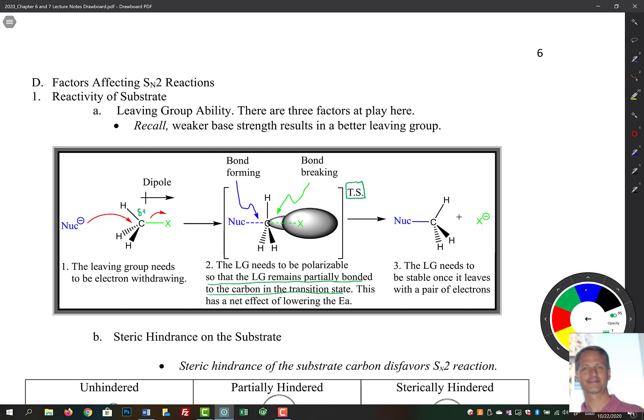The third thing that needs to happen is that leaving group needs to be stable once it leaves with a pair of electrons. And to determine the stability there, we look at the same factors that we looked at to determine whether or not we have a strong acid. It's the stability of the conjugate base that matters there. So we're looking at the stability of this. Things like polarizability. That helps us out in step number two. And it helps us out in step number three.